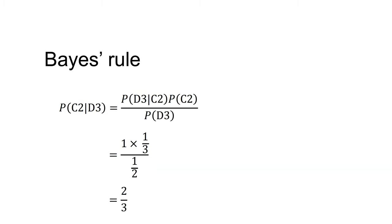Now we can calculate the probability that the car is behind door two given the host opened door three: P(C2|D3) equals P(D3|C2) times P(C2) divided by P(D3), which equals 1 × 1/3 divided by 1/2 = two-thirds. The contestant should switch doors.